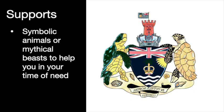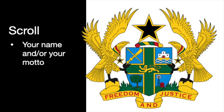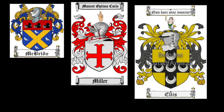Finally, the last part is the scroll at the bottom. The scroll is going to contain your name, and it can also contain a motto. If you look at these examples, we see a name at the bottom and then a motto at the top. The motto is optional. Medieval mottos were often done in Latin, but they can be in English or any language that you choose.